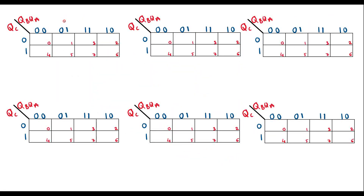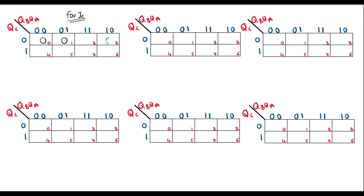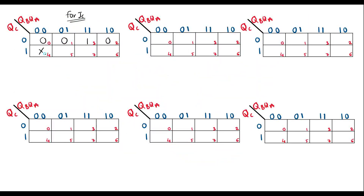Taking the K-map for JC: the inputs are 0, 0, 0, 1 in the valid states, and all remaining cells are don't cares. I can make a group pairing the 1 with a don't care X. The simplified Boolean expression for JC is QB · QA.